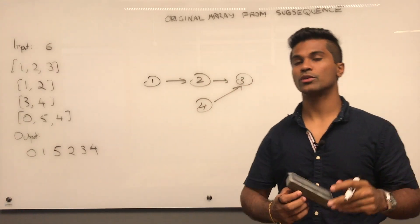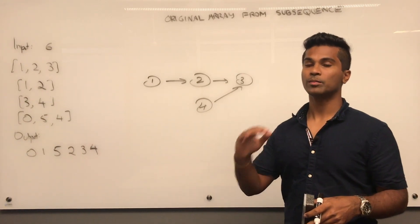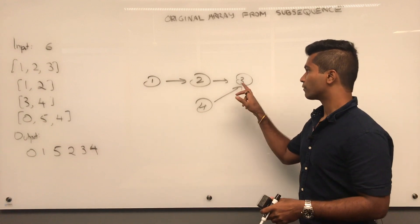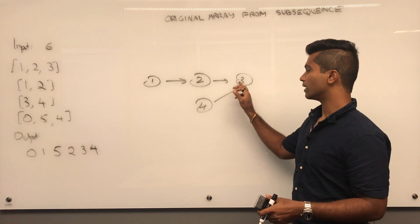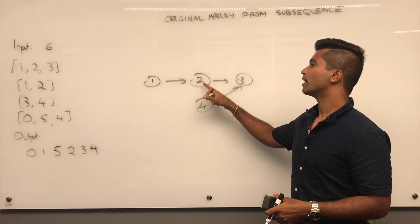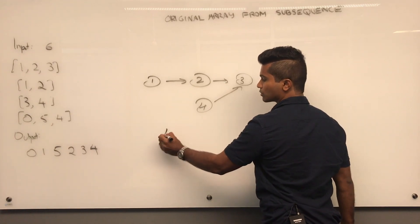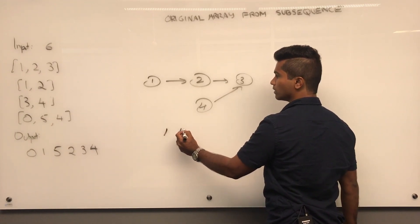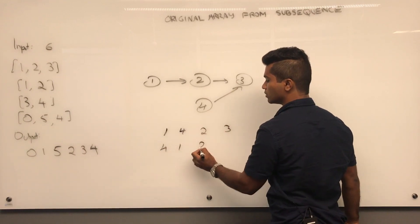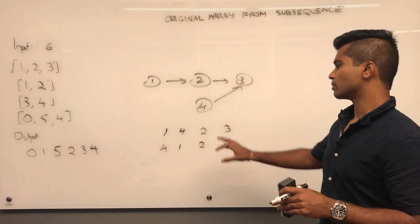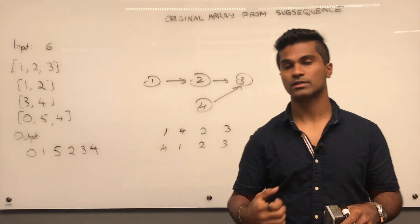Topological sort is an ordering of nodes such that all prerequisites are met. For example, to visit node 3 we must visit node 4 and node 2 first, and to visit node 2 we must visit node 1 first. So a valid topological sort would be 1, 4, 2, 3 — or also 4, 1, 2, 3 — because both cover all nodes and satisfy their dependencies.